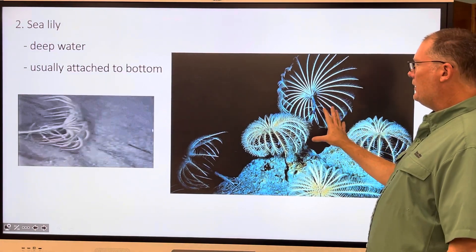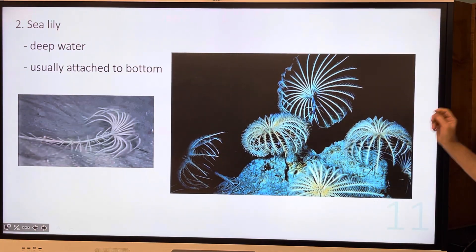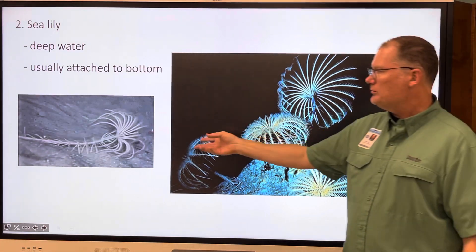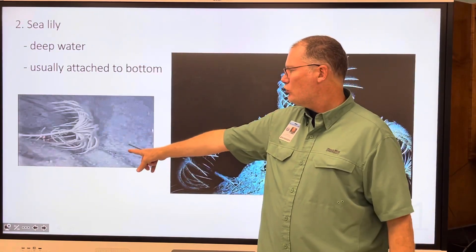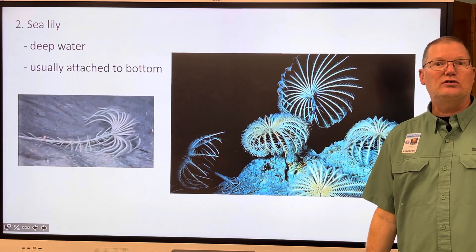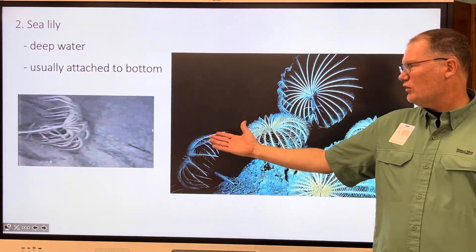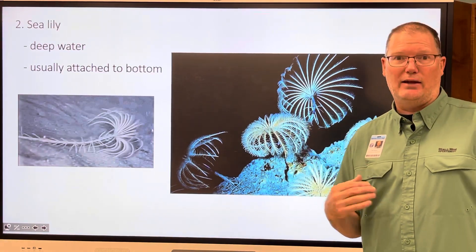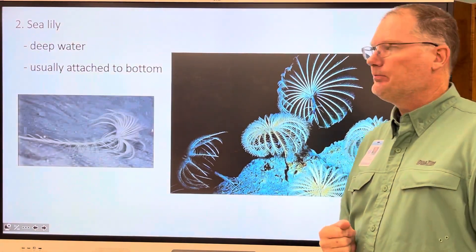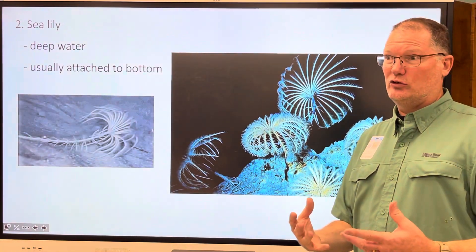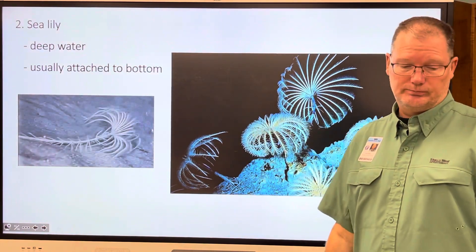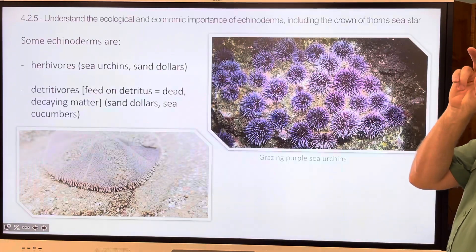Sea lilies are quite amazing. They've also been around for millions of years and are usually found in deep water only. They attach themselves to the bottom, but sometimes if they get dislodged, they can crawl around — it looks like a tree or plant coming to life and walking on the ocean bottom. Every time researchers go down there, they discover new species. We know more about the surface of the moon than we do about the bottom of the ocean.